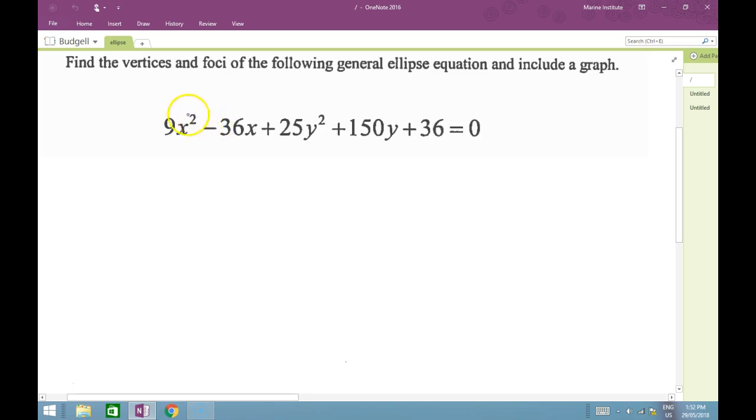Note, the 9x² and the 25y² indicate this is an ellipse. The first thing we're going to do is group all the x terms together and all the y terms together, and bring any single number to the other side.